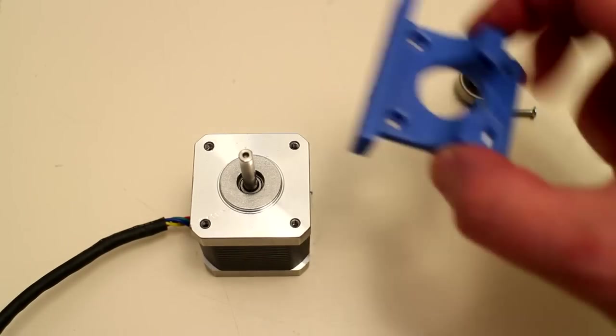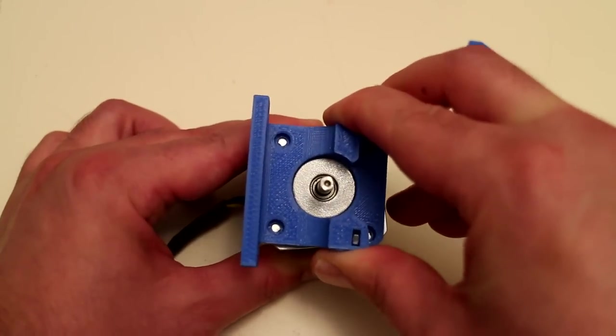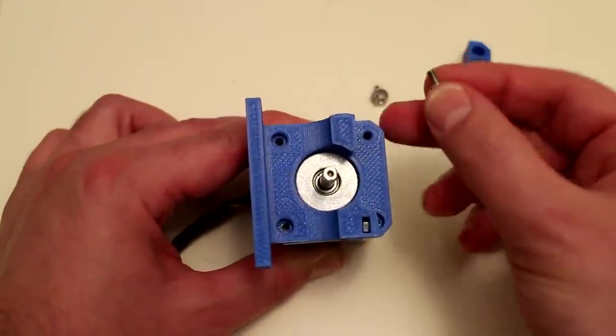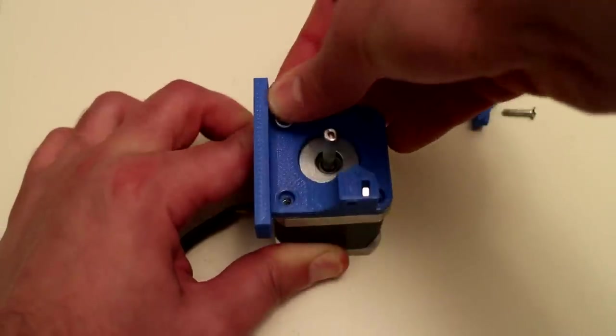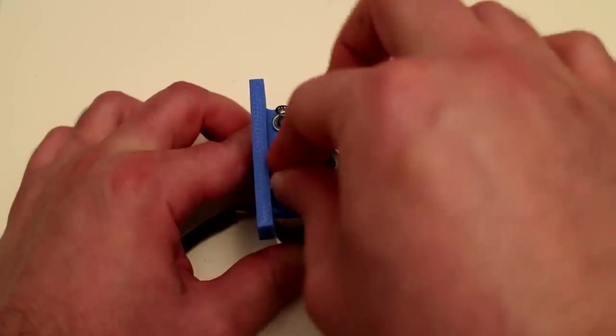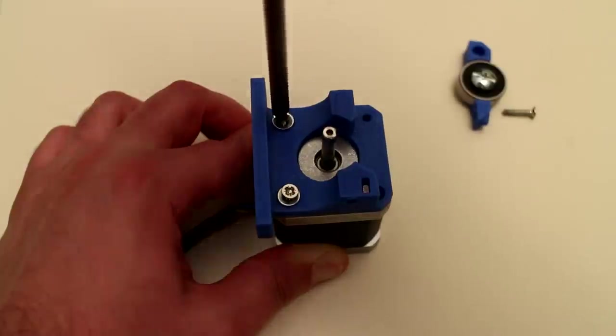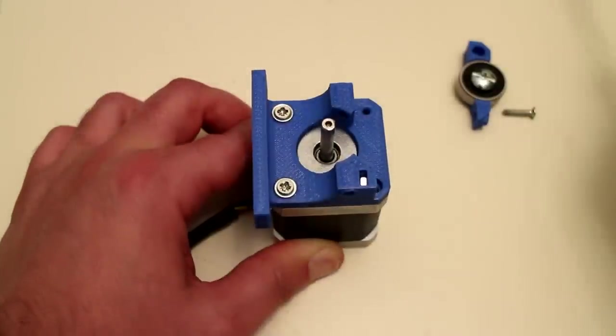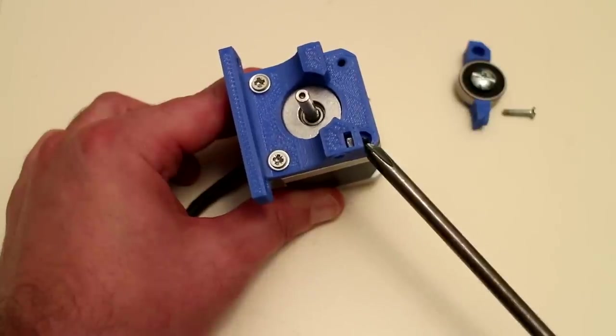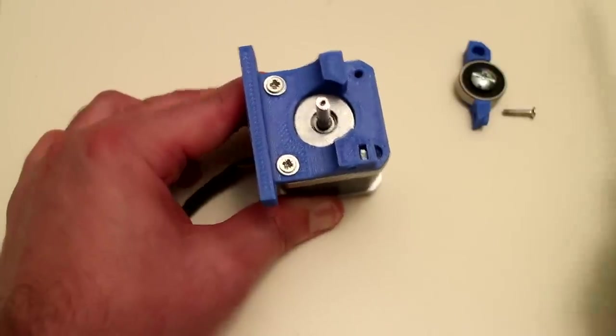Attach the base of the Bowden mechanism to the top of the stepper motor. Line up the holes of the stepper motor with the holes of the base. Take the M3 by 10mm screw with washer and affix that to the top left and bottom left of the stepper motor. I leave the bottom right hole unpopulated as the access is obstructed by the idler locking mechanism.